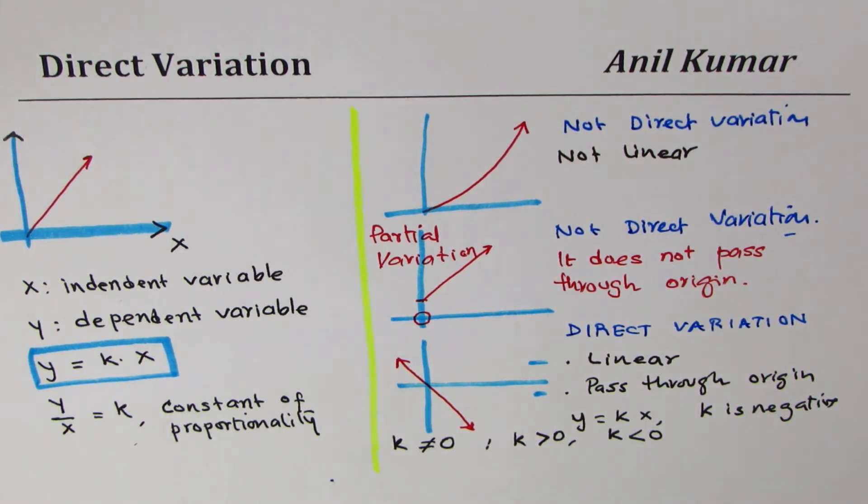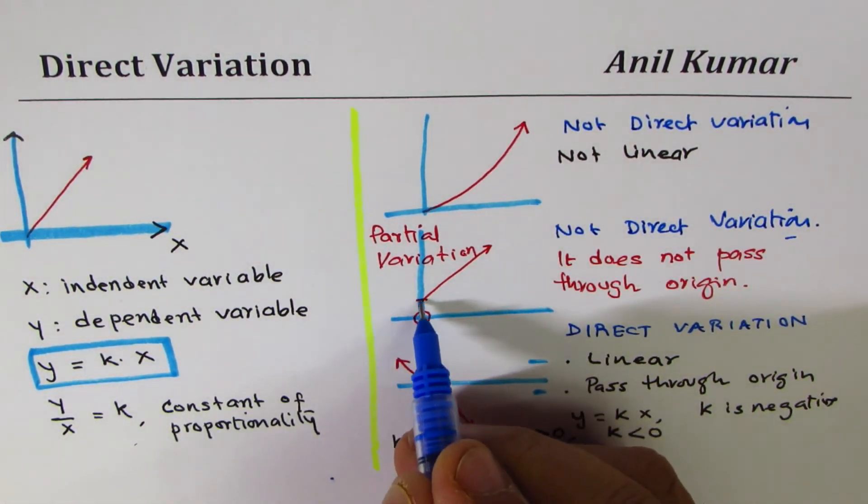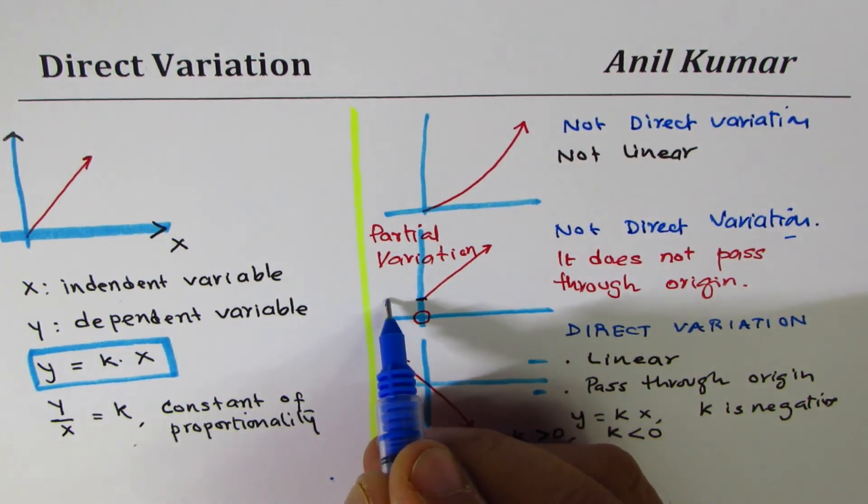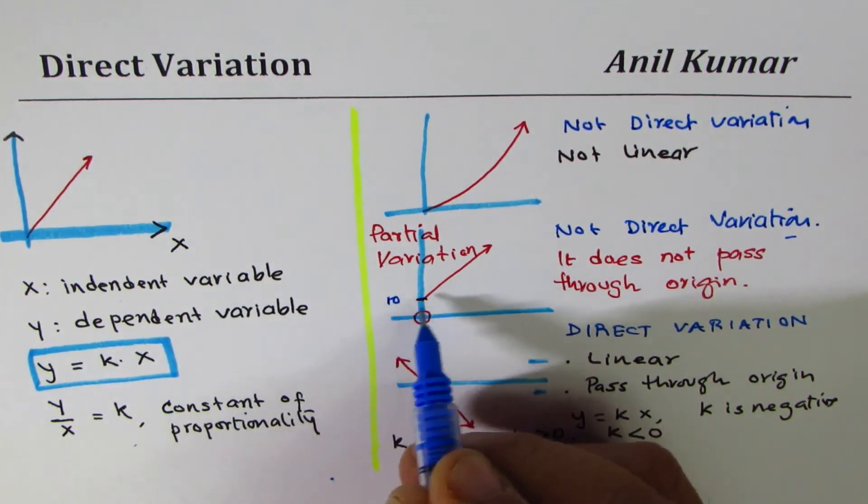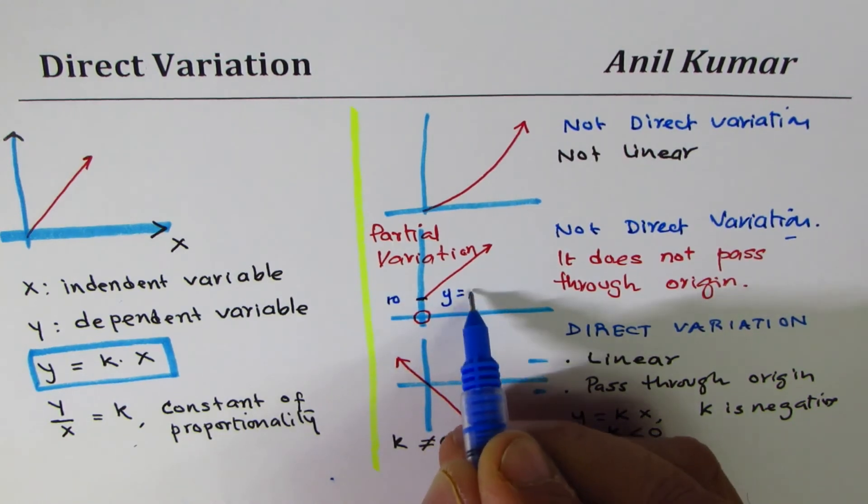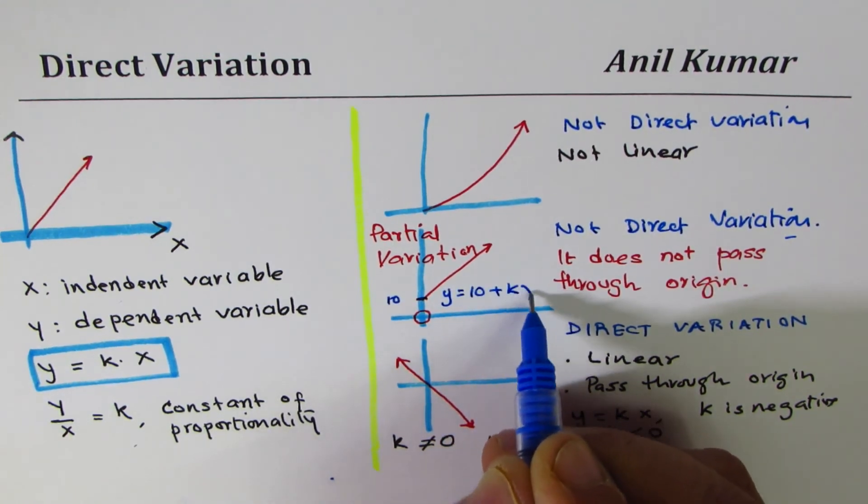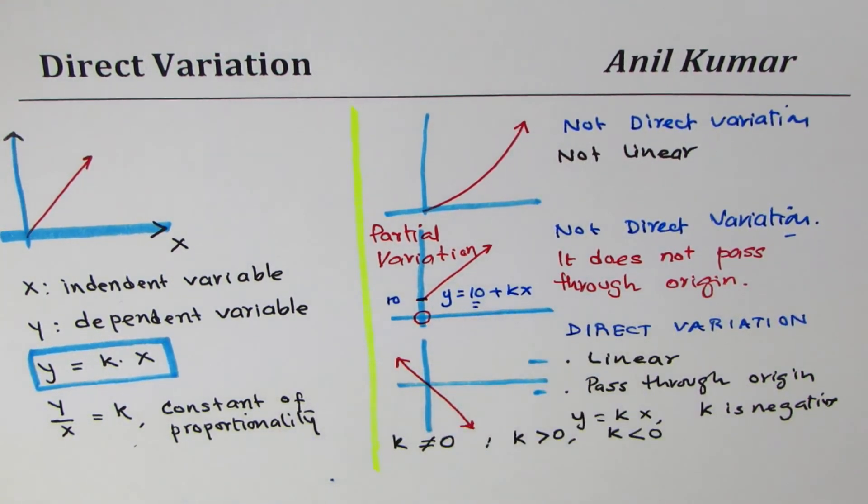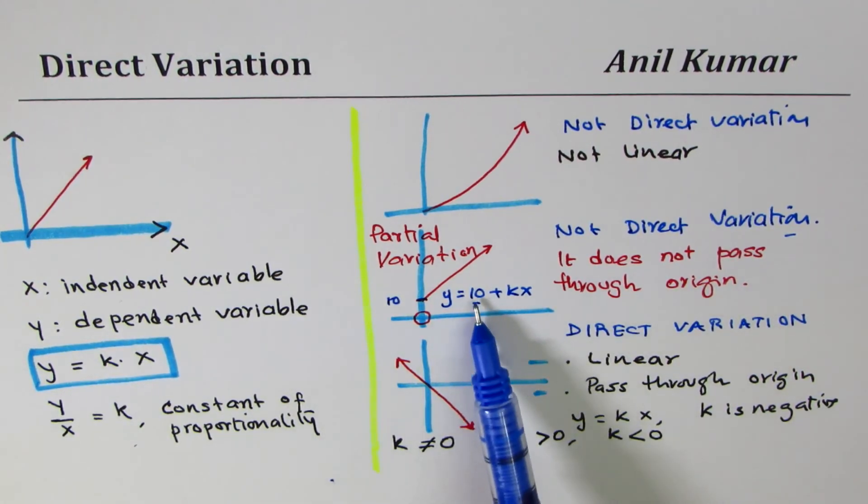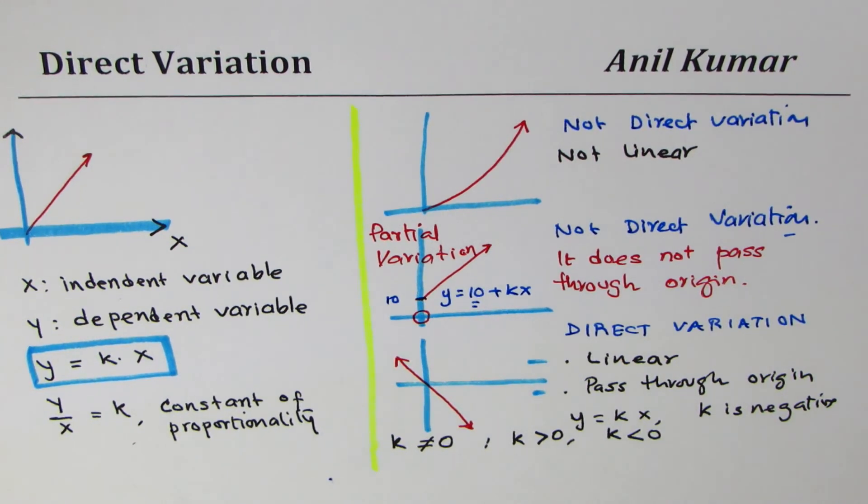For partial variation the relation could be, for example, this point is less than 10, so the relation could be y equals 10 plus kx. So that makes a difference. In direct variation this is always zero so we write y equals kx.